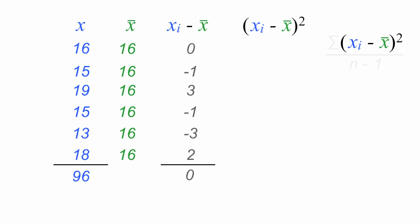The next step is to take the observation minus the mean and square it. So I take 0 and I square it, which is equal to 0. I take negative 1 and square it, which is equal to 1. 3 squared is 9. Negative 1 squared is 1. Negative 3 squared is 9. 2 squared is 4.